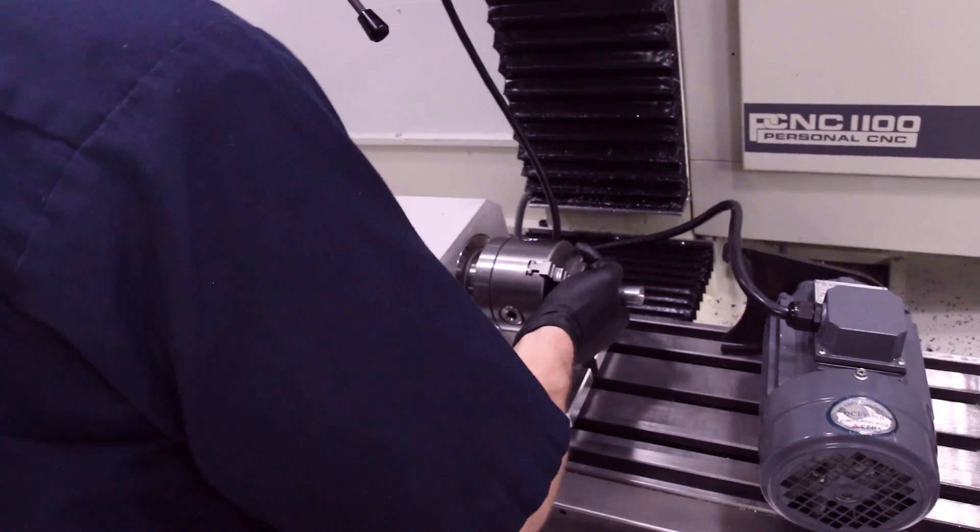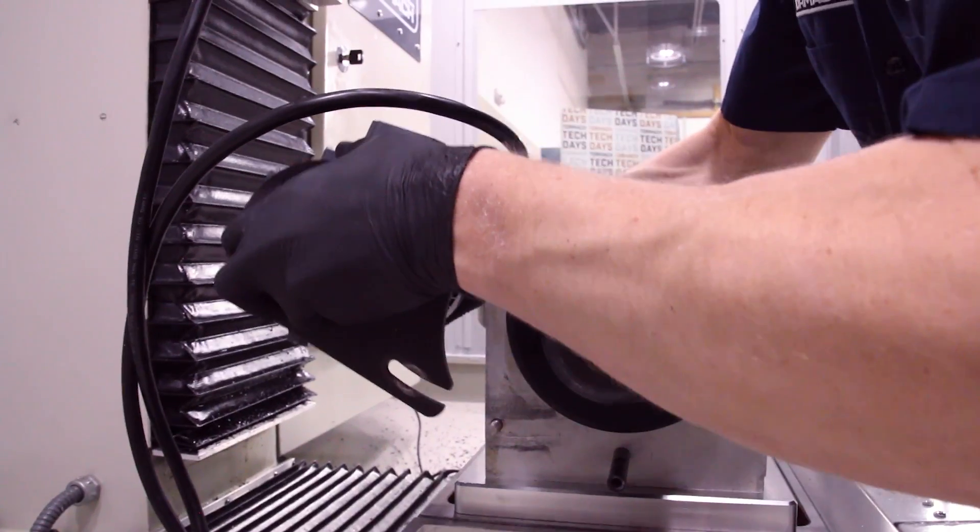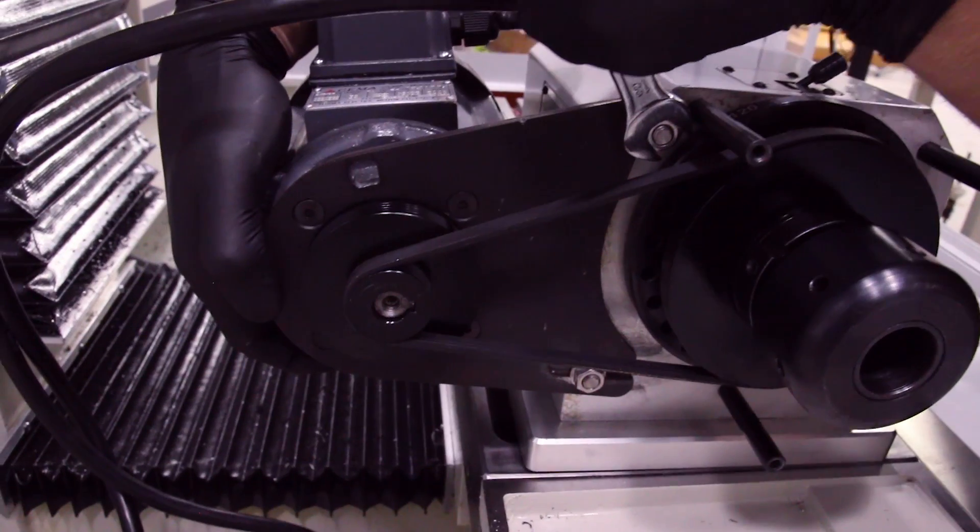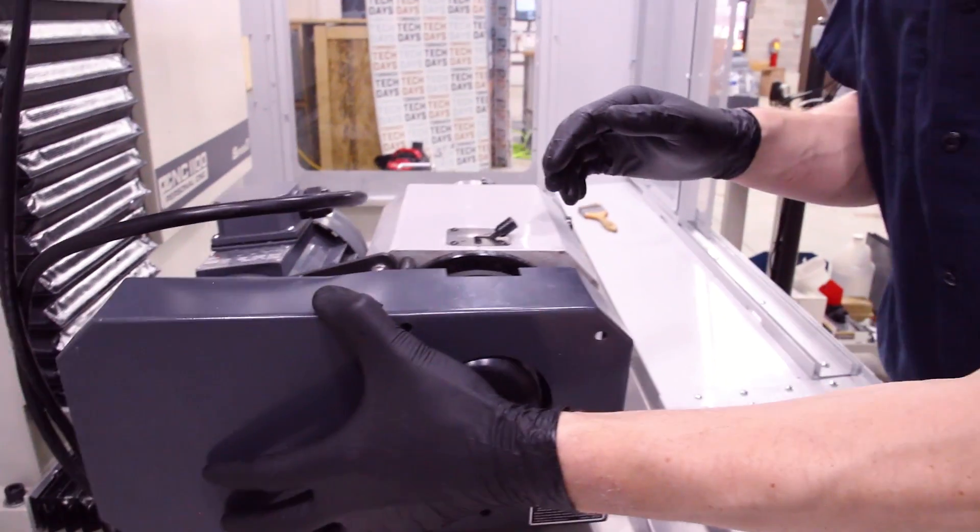Once we get it back in the machine we'll go ahead and plug the cables in, reinstall the motor and the belt and tension the belt, and then we can reinstall the belt cover. Then we'll be able to test the unit.